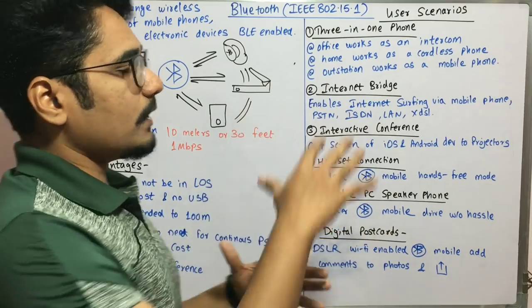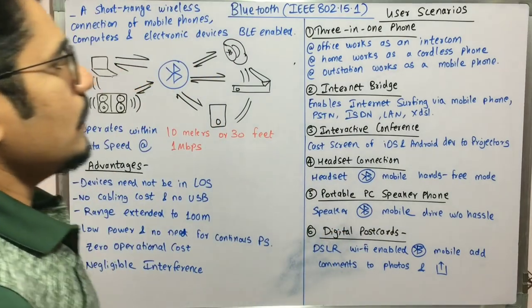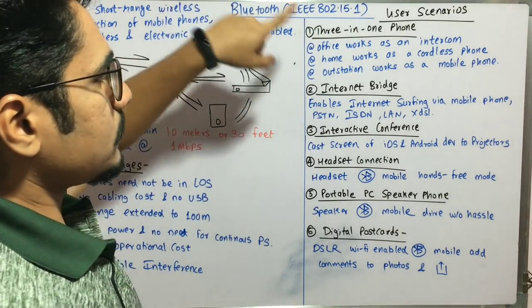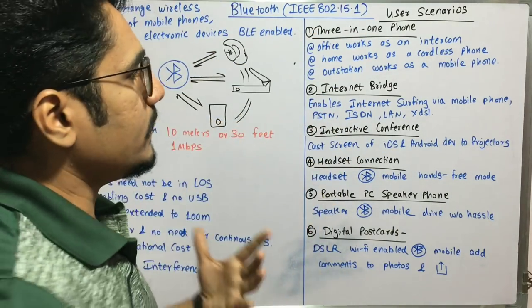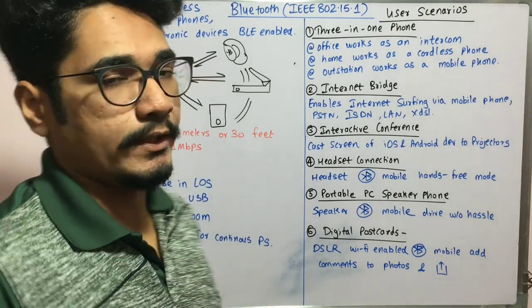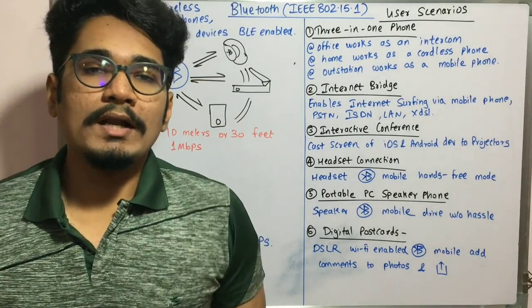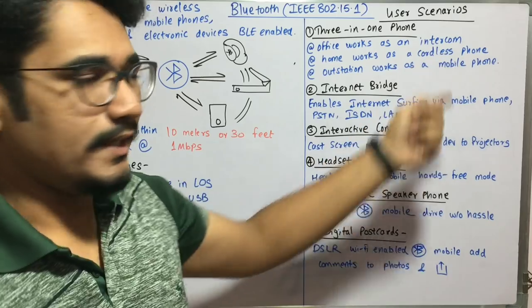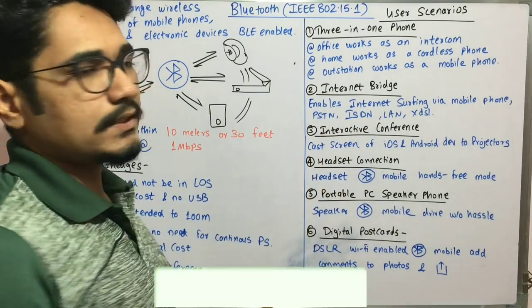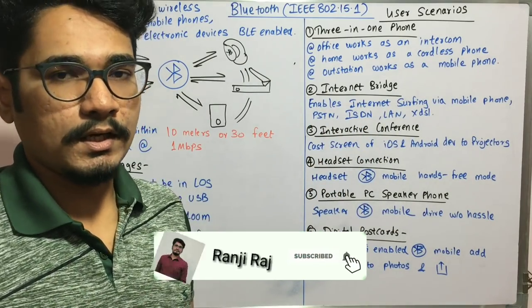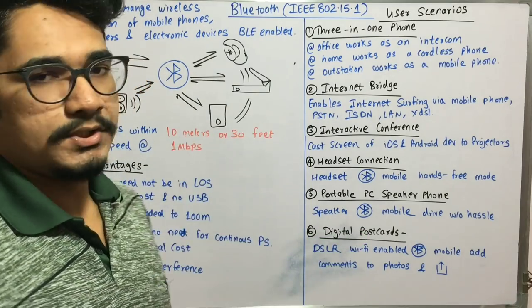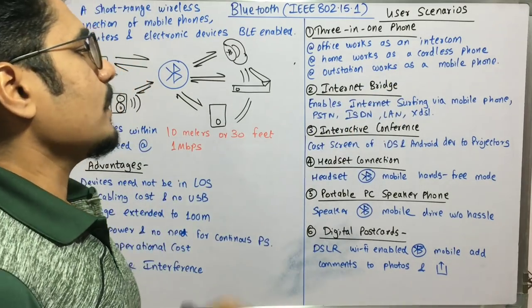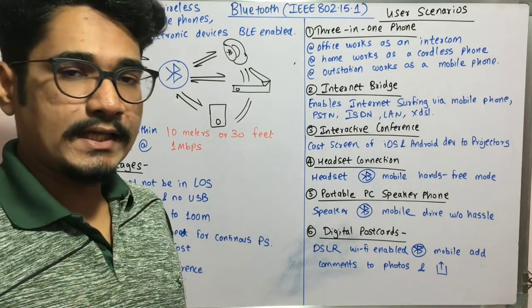Now let's look at real-world use scenarios. First is the three-in-one phone: at your office, a Bluetooth-enabled smartphone can function as an intercom to know who is coming to meet you; at home, it works as a cordless phone so you can roam and communicate freely; and when you're outside or at an outstation, it functions as a standard mobile phone.